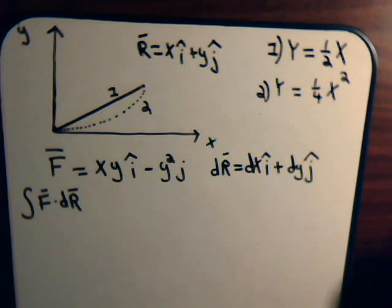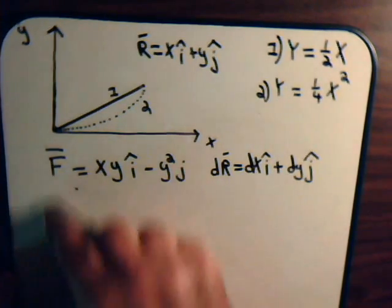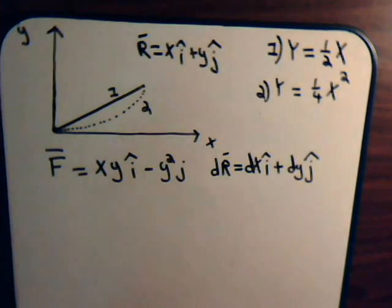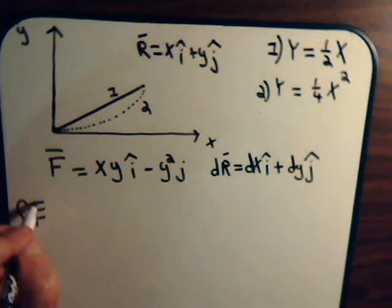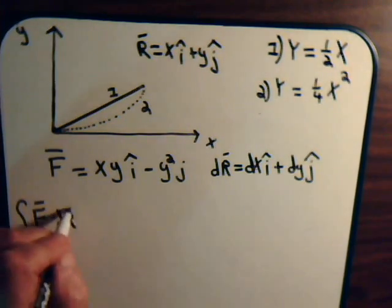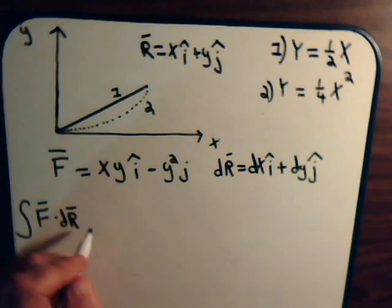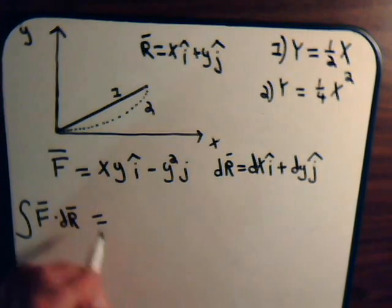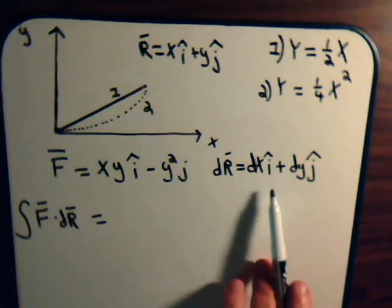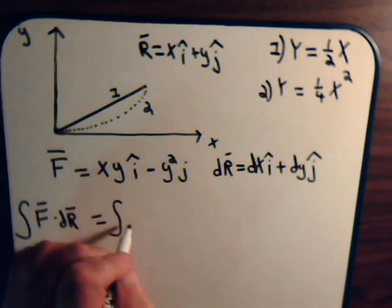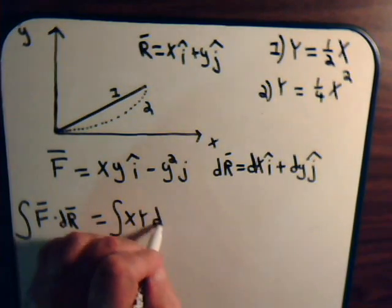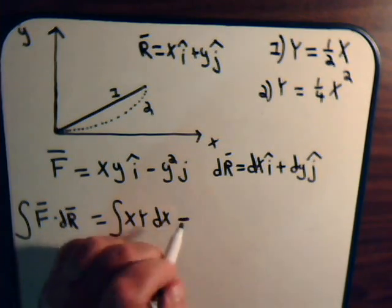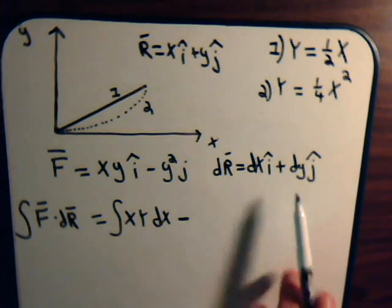So, we want to take the integral of F dot dR, and let's make a little bit of room for that. Integral F dot dR. So, that will equal this dot dR, that will be the integral of xy dx minus y squared dy.